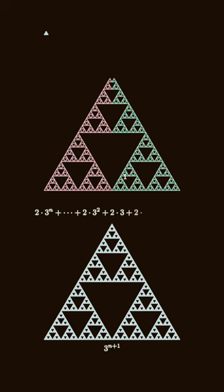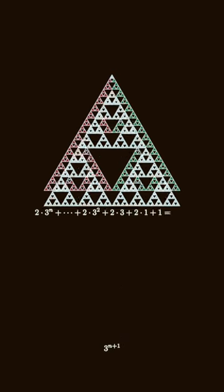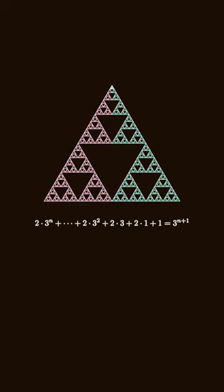If we then stack one last copy of 1 on top, it turns out that we've produced the exact same diagram as the diagram for 3 to the n plus 1. So we get equality between these two formulas.